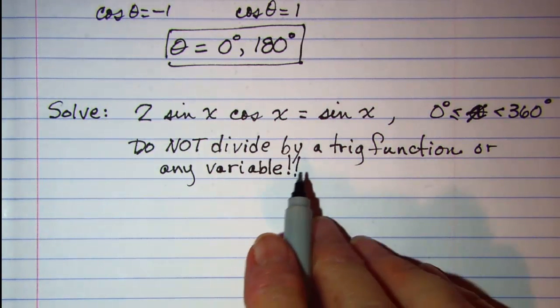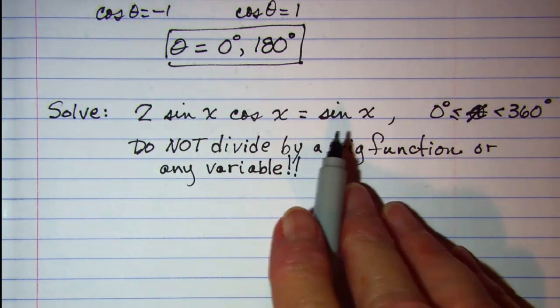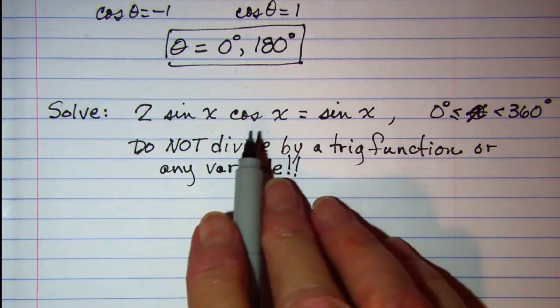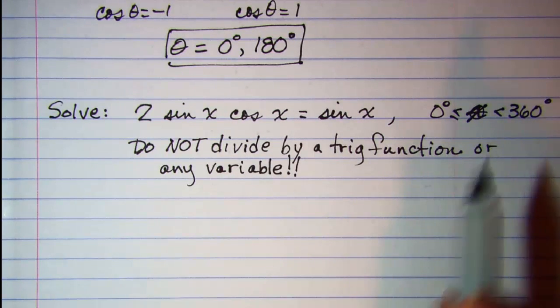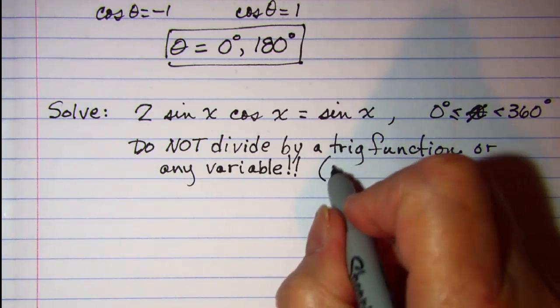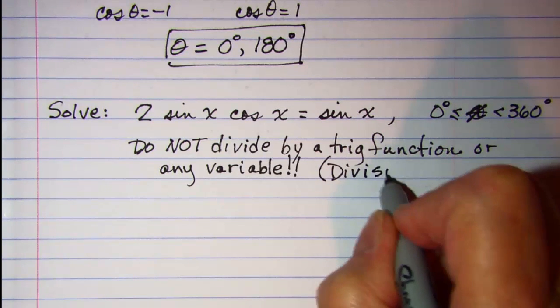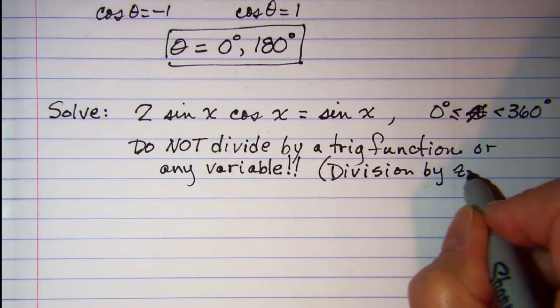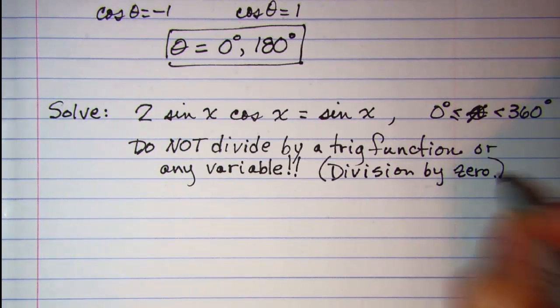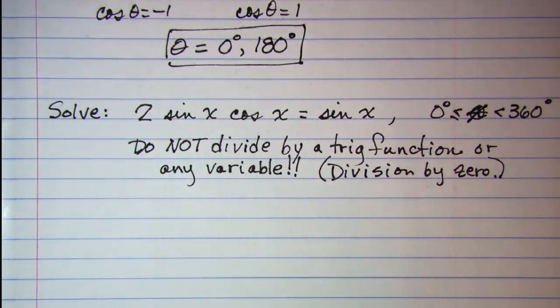And the reason is because that could be 0, the value of that trig function or the value of that variable could be 0 and so then you would have division by 0 which is undefined. So do not divide by a value that you don't know.